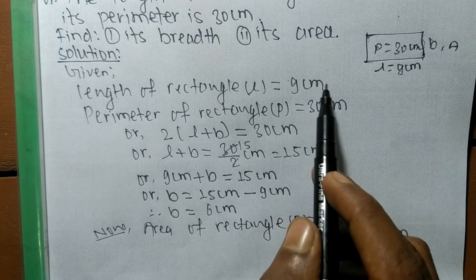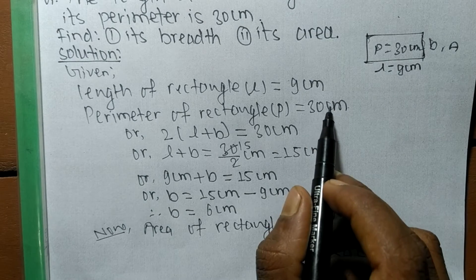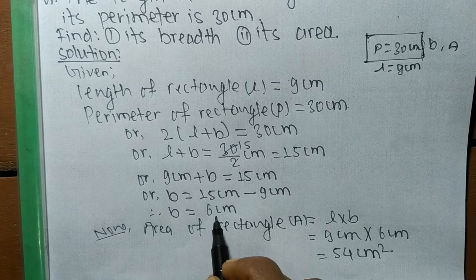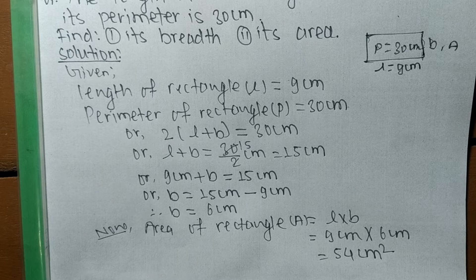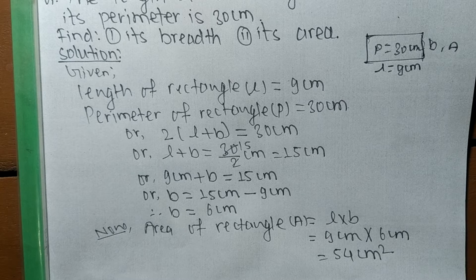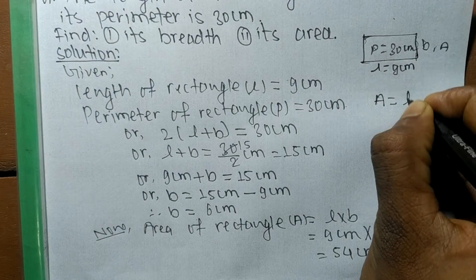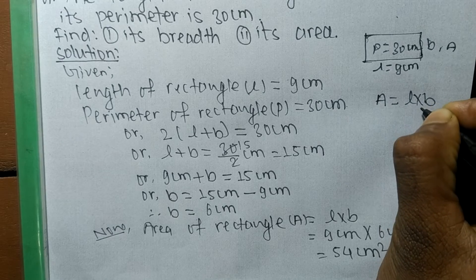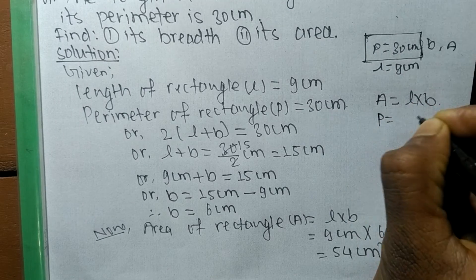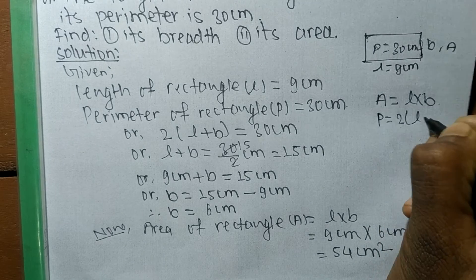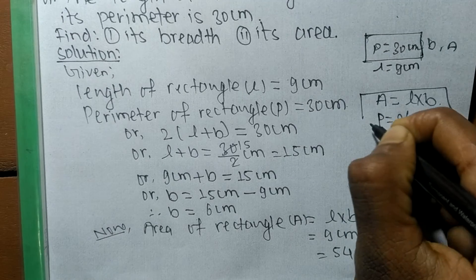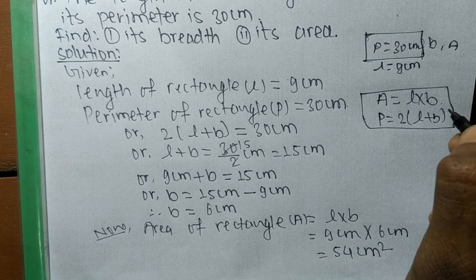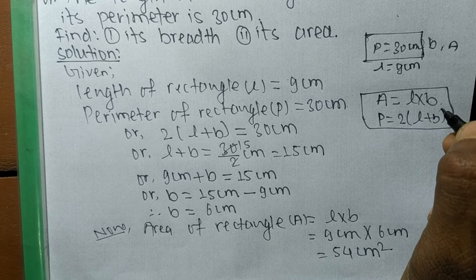So we found both values: the length was already given, the perimeter was already given, and from the perimeter we got the breadth which is 6 cm, and the area which is 54 cm². To solve problems related to rectangles, just remember: area of a rectangle = L × B (length times breadth), and perimeter of a rectangle = 2 × (L + B) (2 times length plus breadth). With these two formulas you can easily solve any rectangle problem.